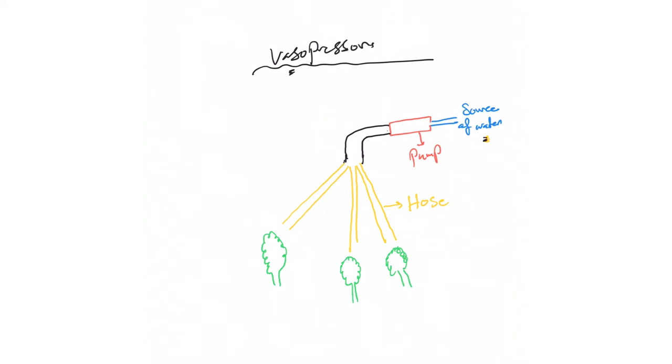We have a source of water to explain how vasopressors work. We have a source of water, then a pump here, and a big hose. Then these small hoses go to three trees.